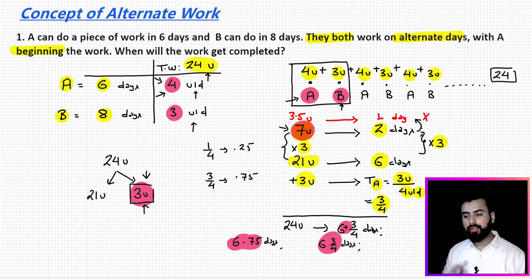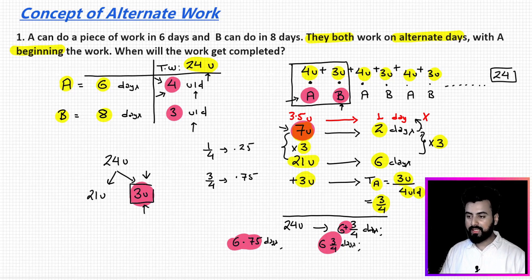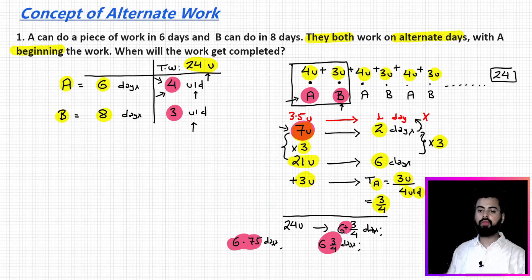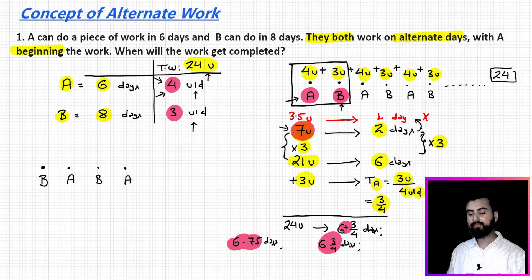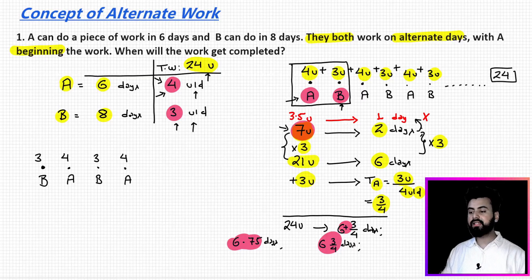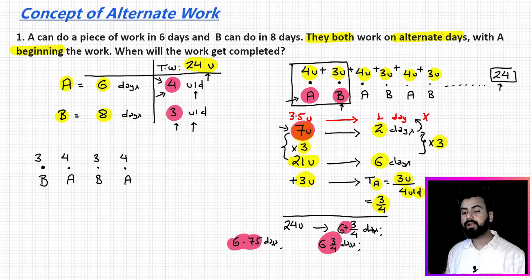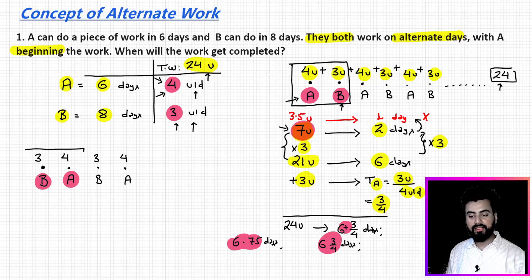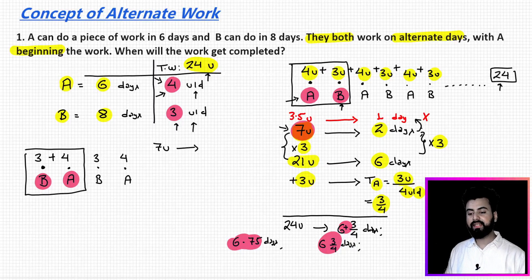Now let's consider what happens if instead of A, it is B who starts the job, followed by A, in the same alternating pattern. Would the answer change? In one complete cycle where B starts and A ends: B does 3 units, A does 4 units — so 7 units of work is completed in 2 days. The cycle work is the same.